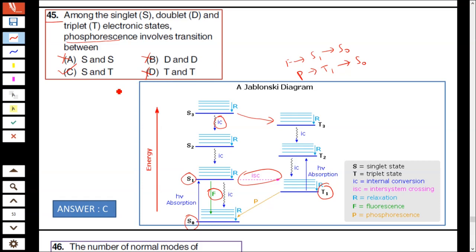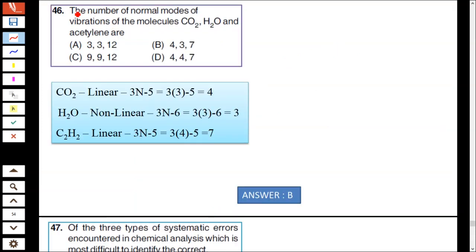Question number 46: The number of normal modes of vibration of carbon dioxide, water, and acetylene. Carbon dioxide is a linear molecule, 3N minus 5. In carbon dioxide there are three atoms, so 3 into 3 minus 5 which is 4. Carbon dioxide shows 4 modes of vibration.